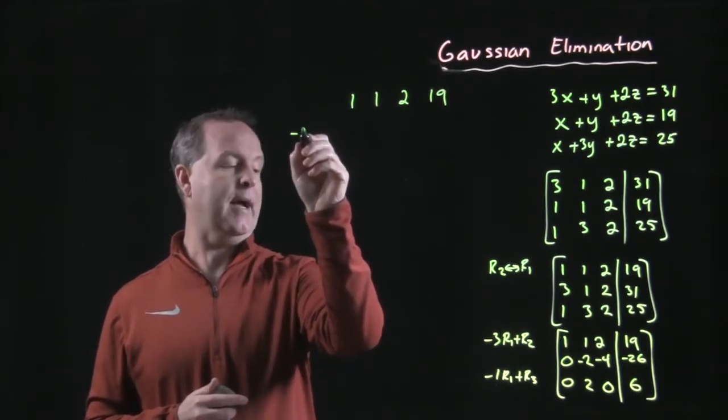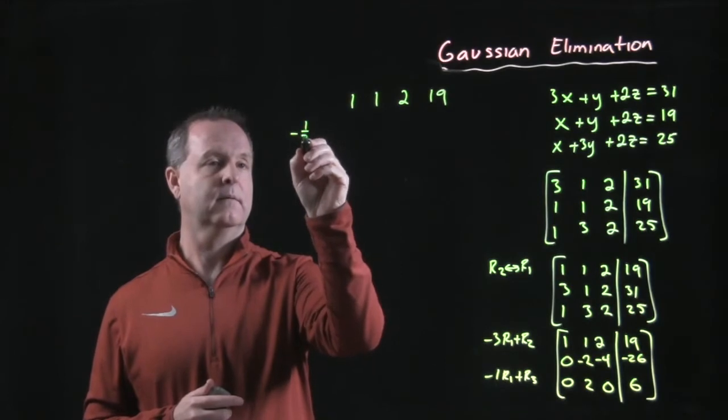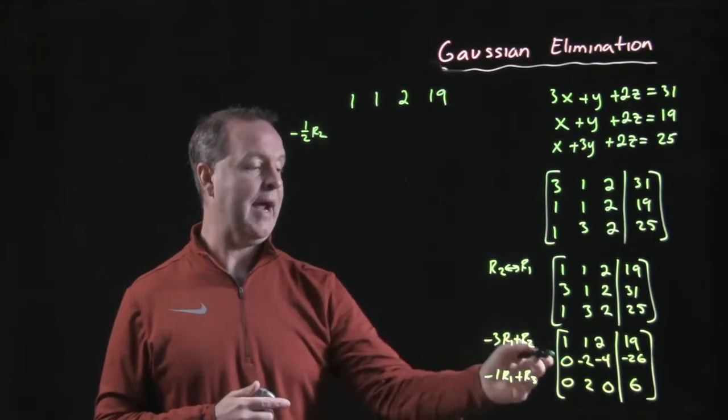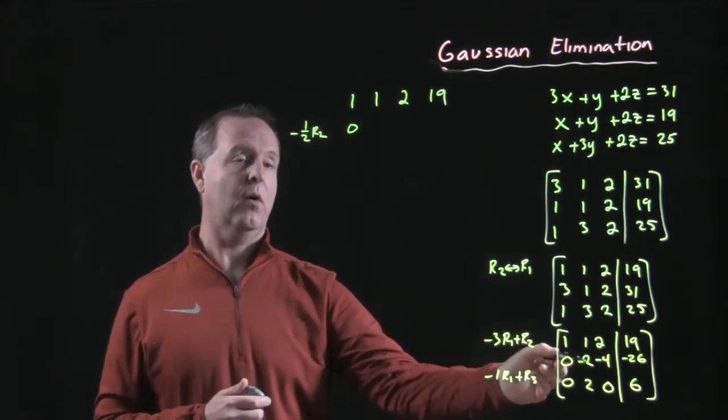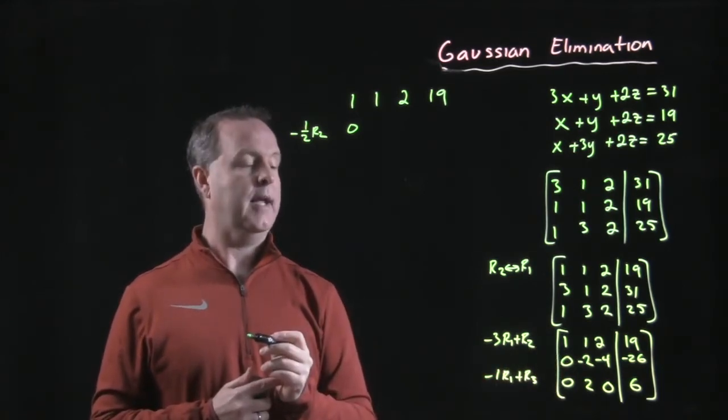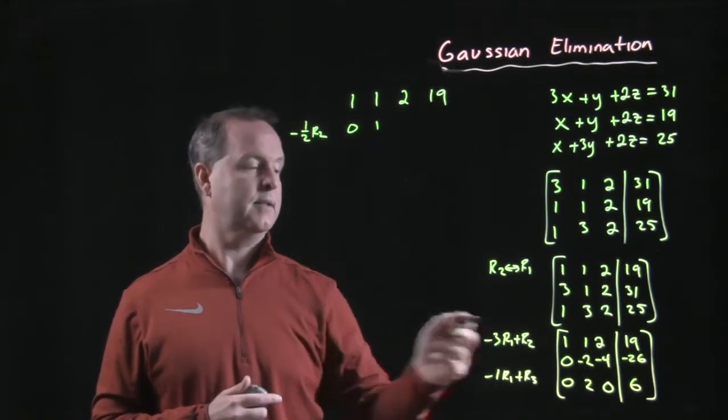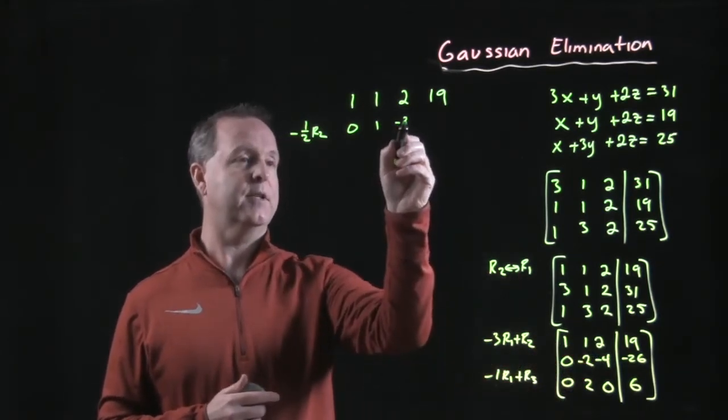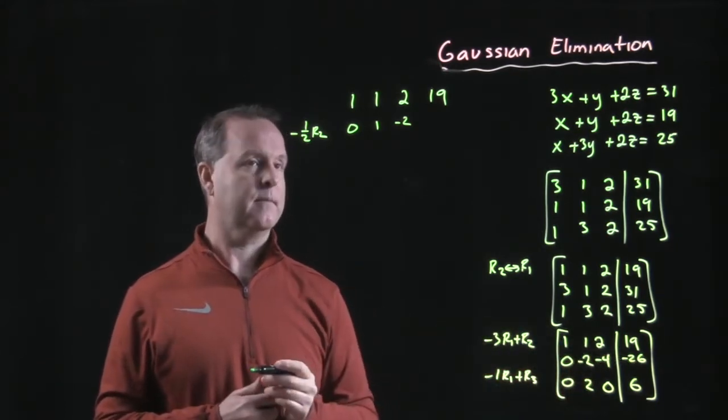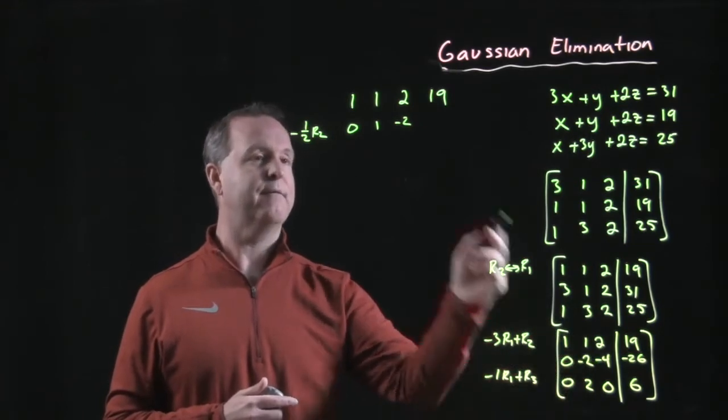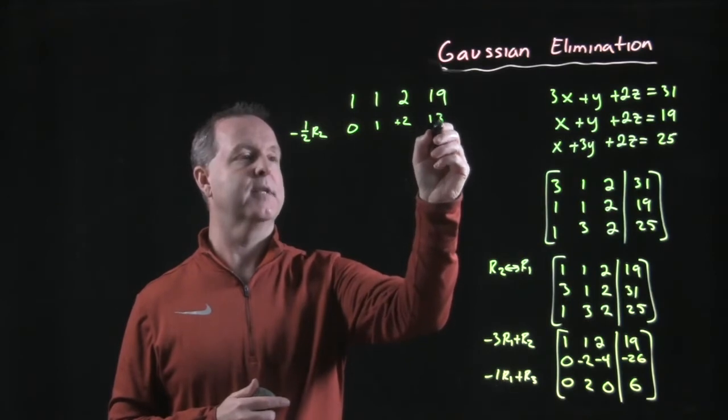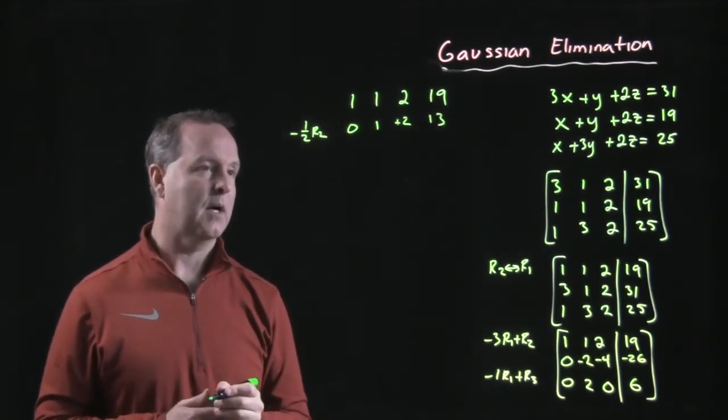Let's do a factor. Let's do negative one half times row two. So everywhere in row two, let's multiply it by negative one half. So we still have a zero. Negative two times negative one half produces a one. Negative four times negative one half is positive two. Negative one half times negative 26 makes positive 13. All right, so we're good with that.